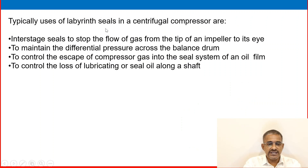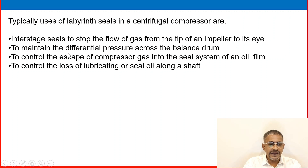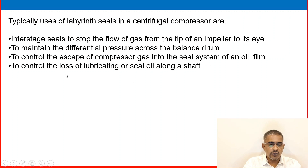Typical uses of labyrinth seals in a centrifugal compressor include: interstage seals that stop the flow of gas from the tip of an impeller to its eye; maintaining the differential pressure across the balance drum; controlling the escape of compressor gas into the seal oil film system; and controlling the loss of lubricating or seal oil along the shaft.